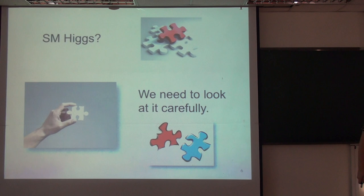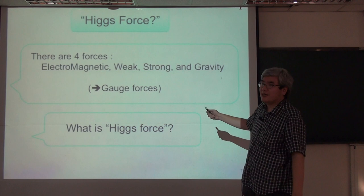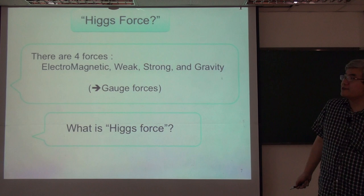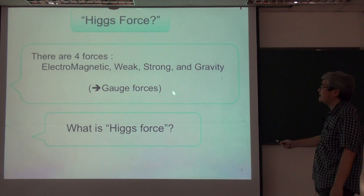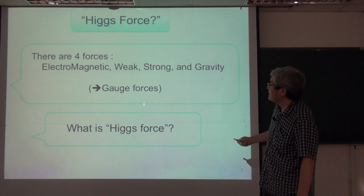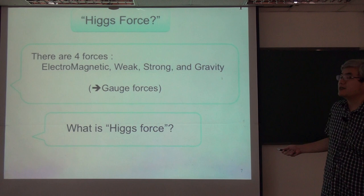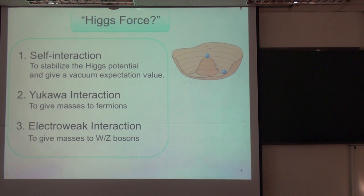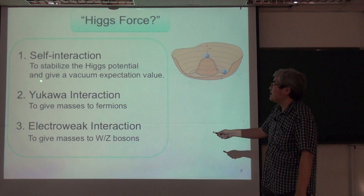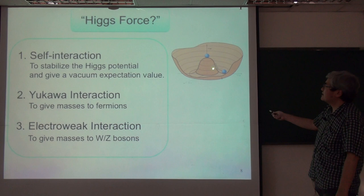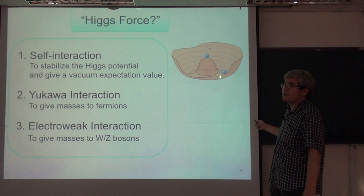I will talk about Higgs forces. In the textbook, it is written that there are four forces in nature: electromagnetic force, weak force, strong force, and gravity. However, for the Higgs, we encounter new forces — not the gauge forces. So what is the Higgs force? The Higgs forces are three types. The first one is self-interaction, Higgs self-interaction. This is needed to stabilize the Higgs potential and give a vacuum expectation value. To stabilize the potential, we need self-coupling — Higgs self-coupling. This is actually a force: the self-interaction force.